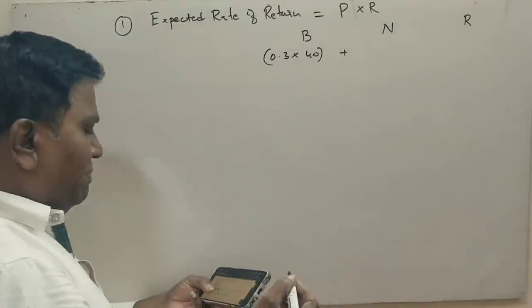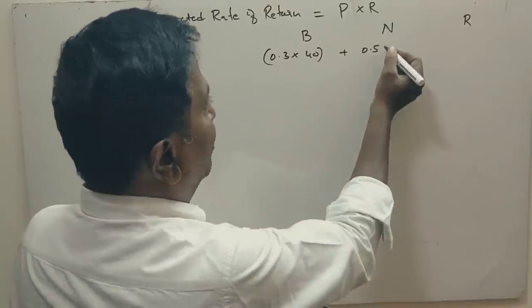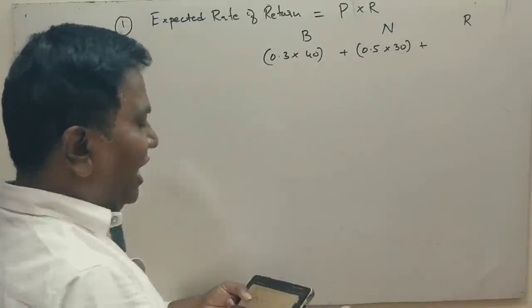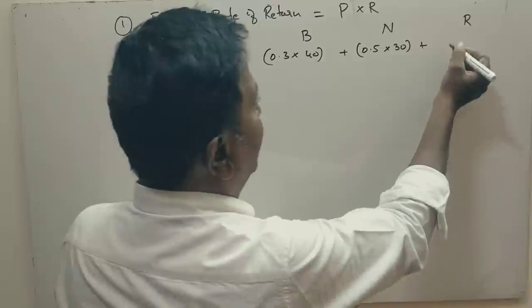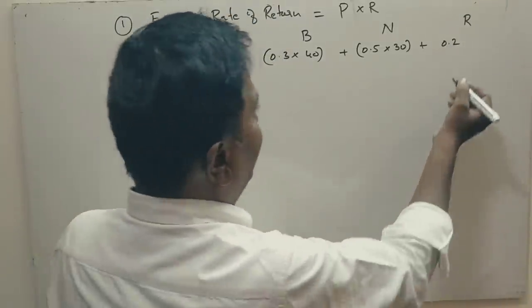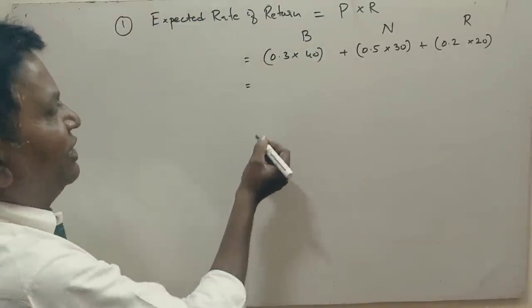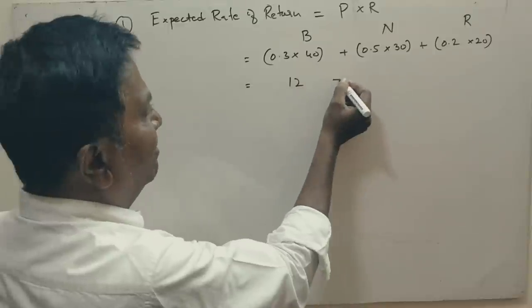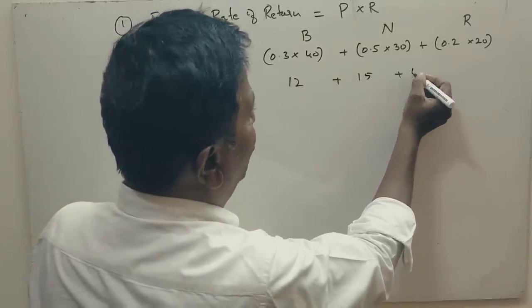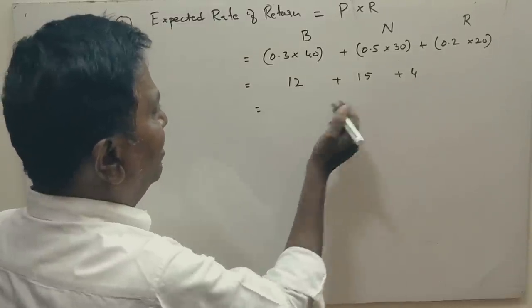And during the normal period, the probability of 50% when you get a 30 rupees of return. And the probability of getting return in a recession period is 20%, and if you get a 20 rupees of return. What is the total expected rate of return? See, this is 12, this is 15, this is 4 rupees. Totally, how much you get? 27, 31, 31.